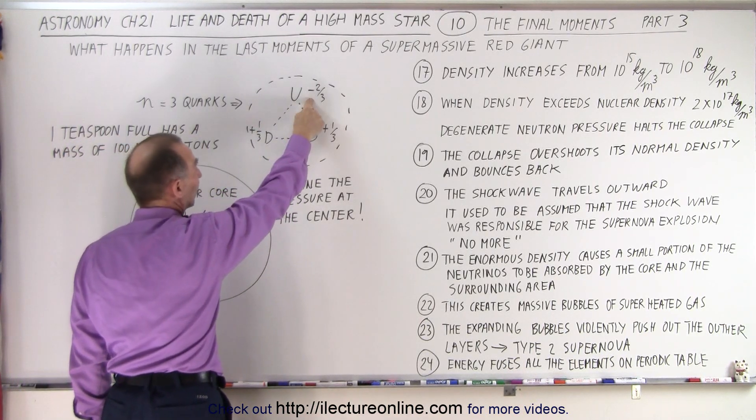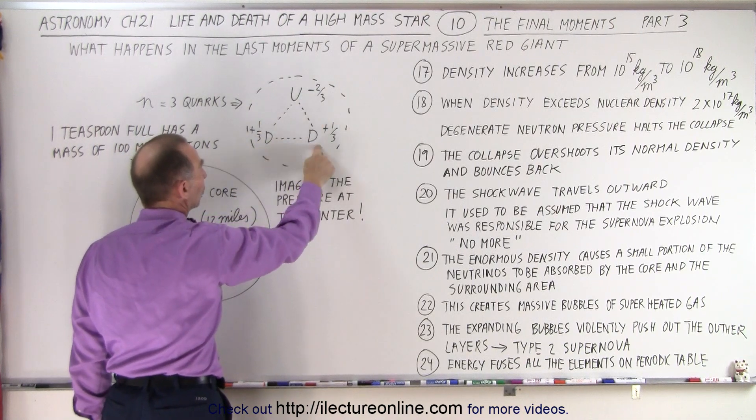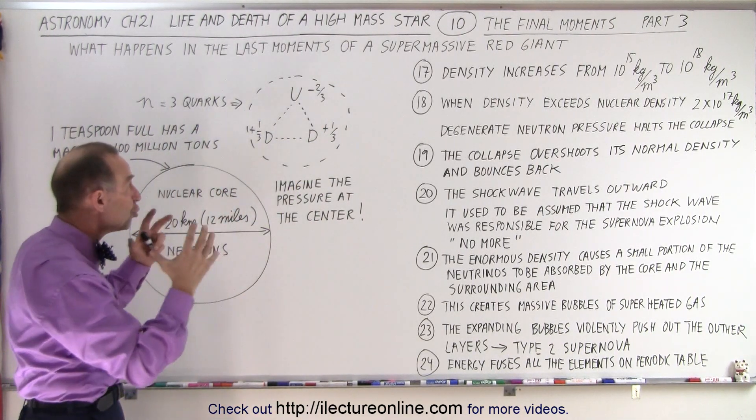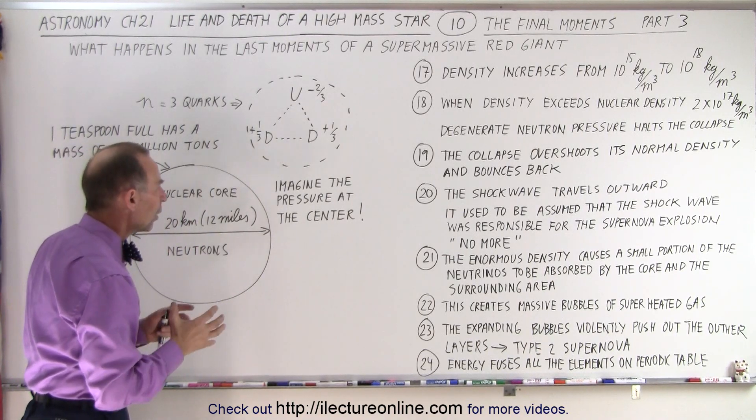It has an up quark and two down quarks. Notice the up quark has a minus two-thirds charge, and the down quarks each have a plus one-third charge. So together, that is a neutral particle called a neutron.